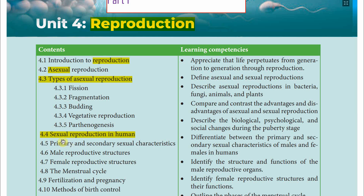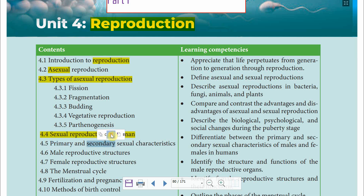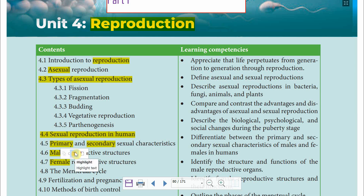At 4.5 we will talk about Primary and Secondary Sexual Characteristics. At 4.6 we will talk about female reproduction systems.